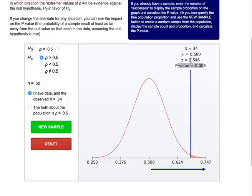This is the standard score or z-score if we standardize the sample proportion value of 0.68 assuming the null hypothesis is true.